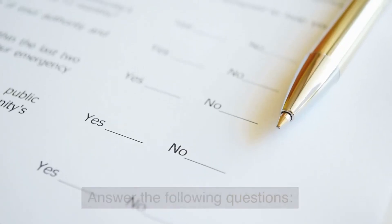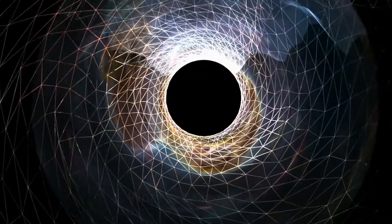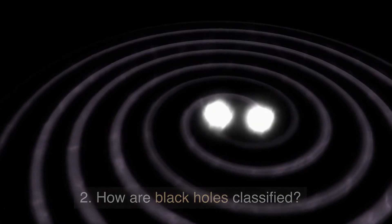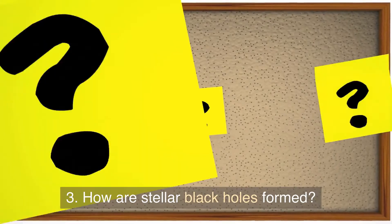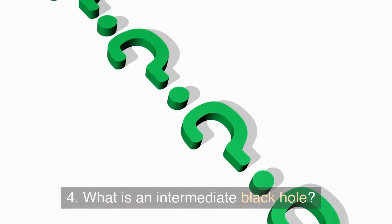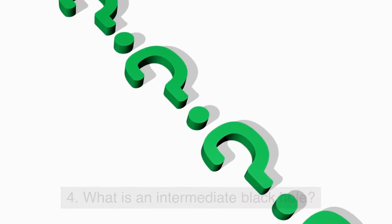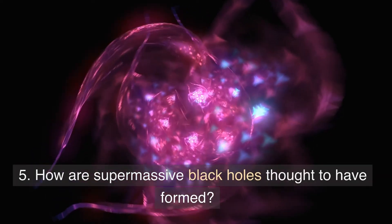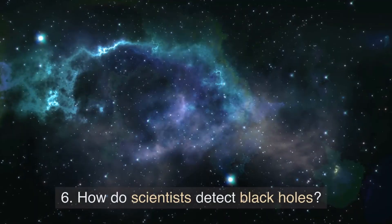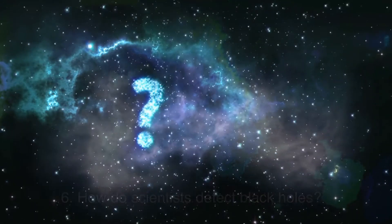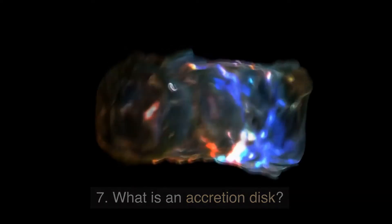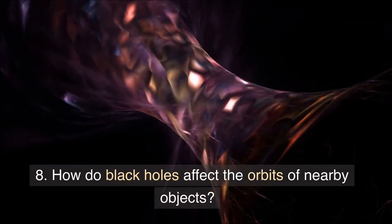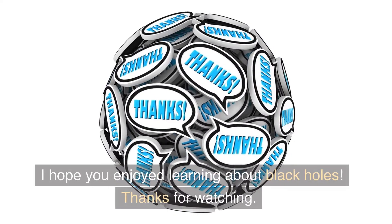Answer the following questions: 1. What is a black hole? 2. How are black holes classified? 3. How are stellar black holes formed? 4. What is an intermediate black hole? 5. How are supermassive black holes thought to have formed? 6. How do scientists detect black holes? 7. What is an accretion disk? 8. How do black holes affect the orbits of nearby objects? 9. What is spaghettification? 10. What is the event horizon? I hope you enjoyed learning about black holes.